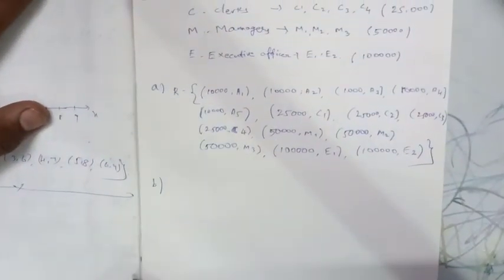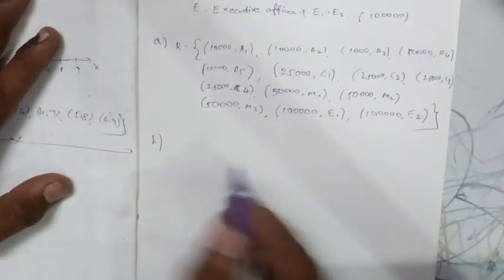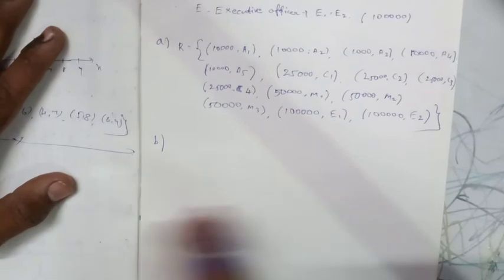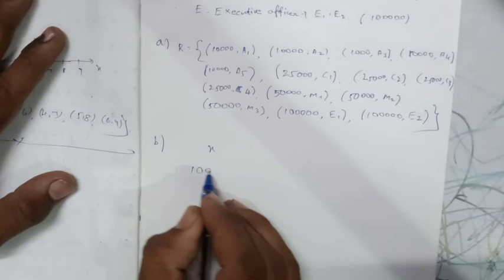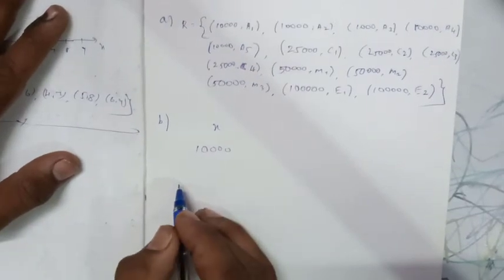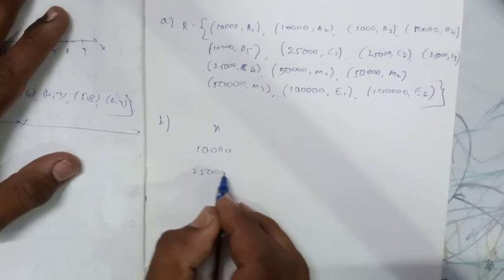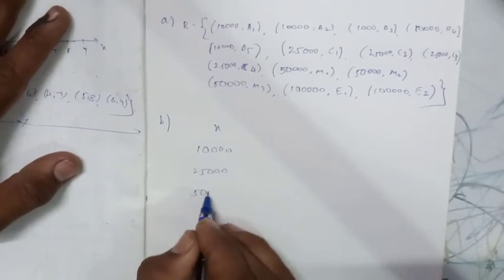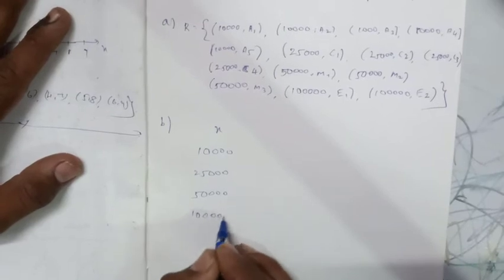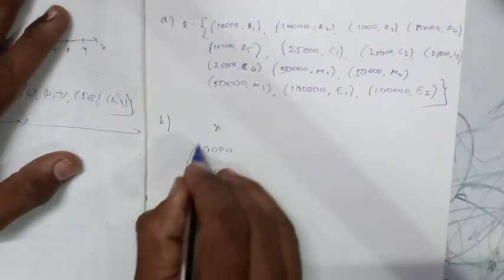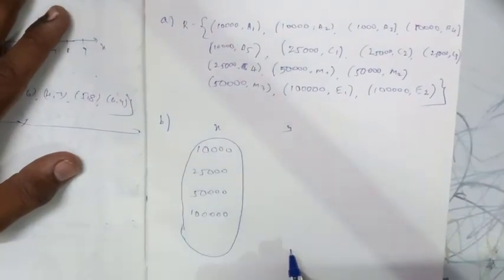Now for the second part — the arrow diagram. On the X side we write the salaries: assistant salary 10,000, clerk 25,000, manager 50,000, and executive officer 1 lakh. On the Y side we list all the employees.